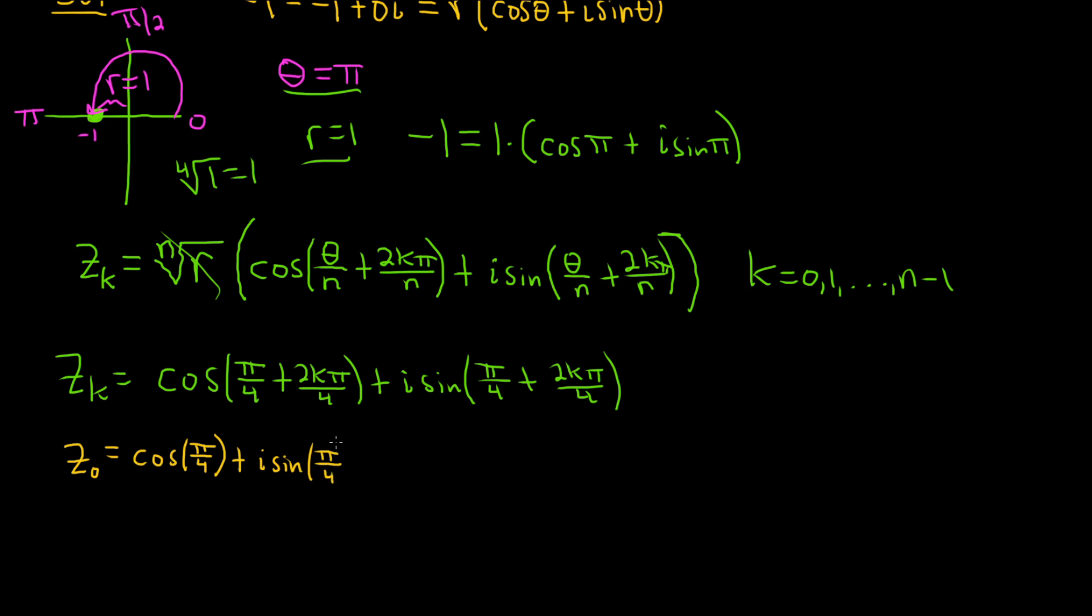Really nice angles. Most people memorize these. These are both square root of 2 over 2. So our first root is the square root of 2 over 2 plus i square root of 2 over 2. So this is one of the fourth roots of negative 1.